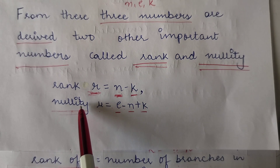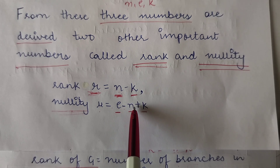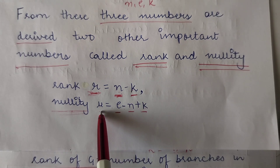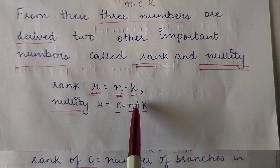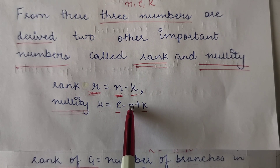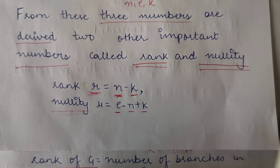The nullity is derived using the formula E minus N plus K. Nullity is denoted by mu, so mu equals E minus N plus K, where E represents the number of edges, N represents the number of vertices, and K represents the number of components in the graph.